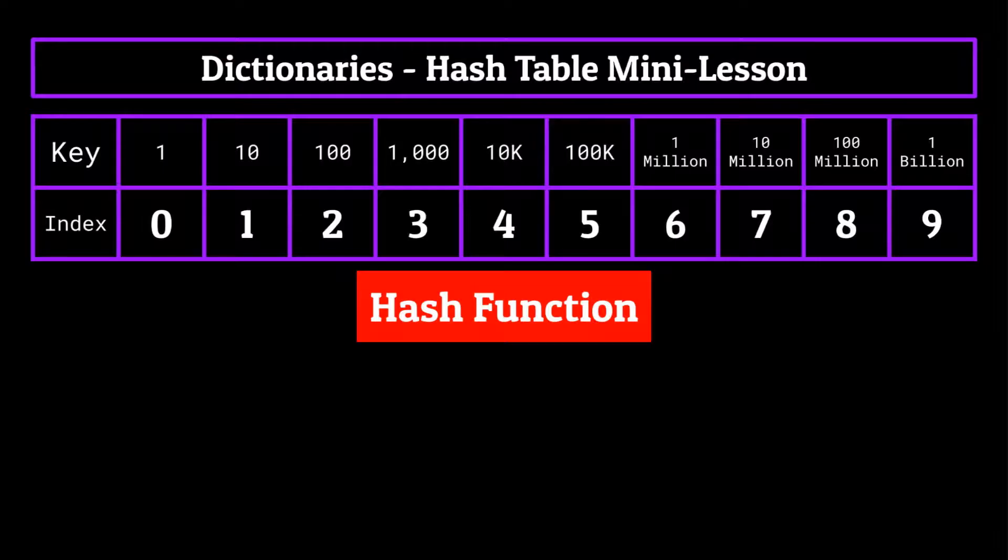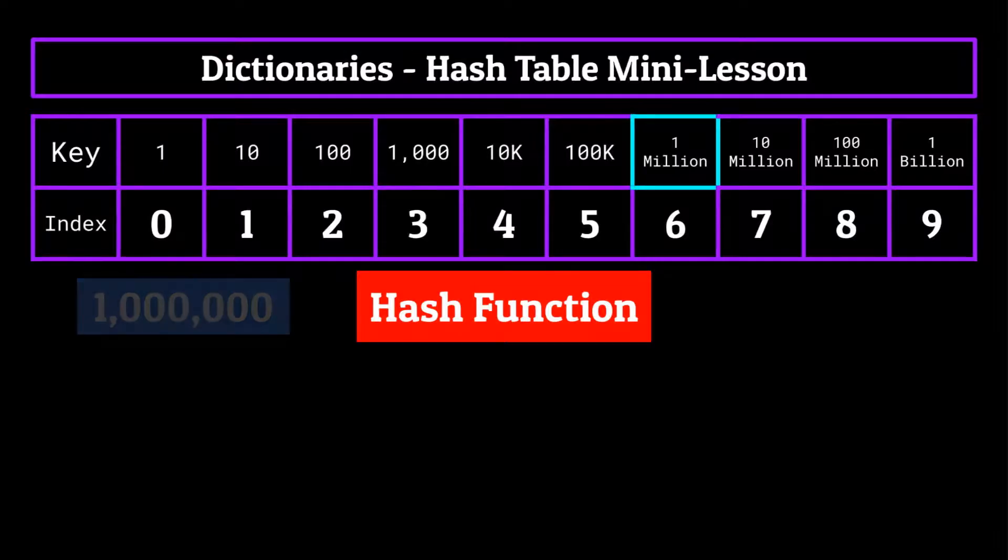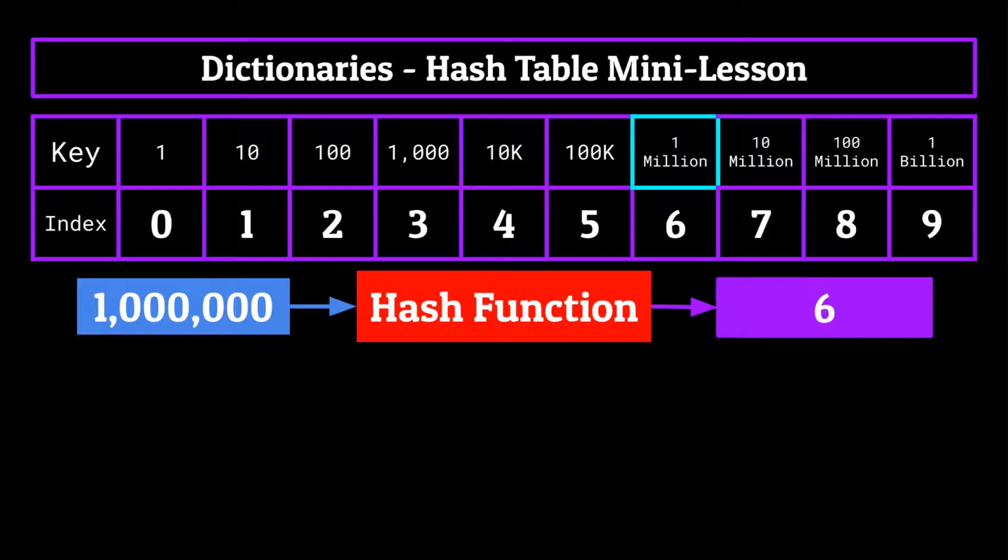The best part about hash functions. Now let's say that we wanted to get the value which is paired with the 1 million key. All we would need to do is put 1 million into our hash function. And it'll tell us where that key value pair is stored within the hash table. In this case at the sixth index, and then we'd be able to retrieve that value from the key value pair.